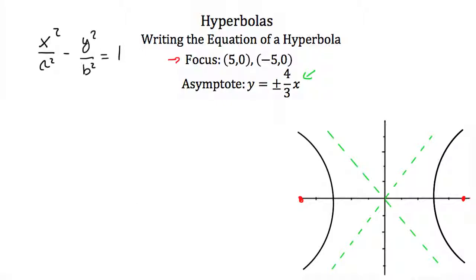To finish writing this equation we need to find our values for a and b. We know that our asymptotes always have the equation y equals plus or minus b over a times x. That means that b over a is equal to four-thirds.